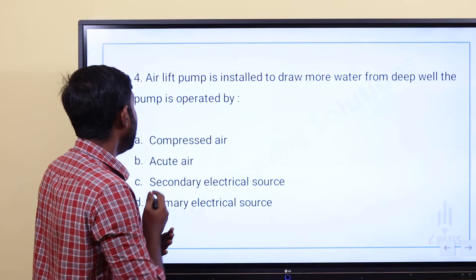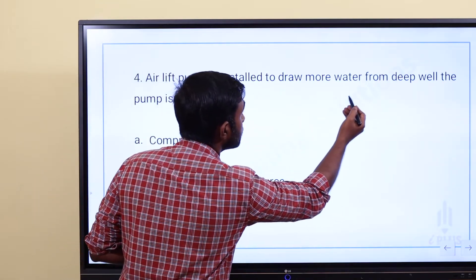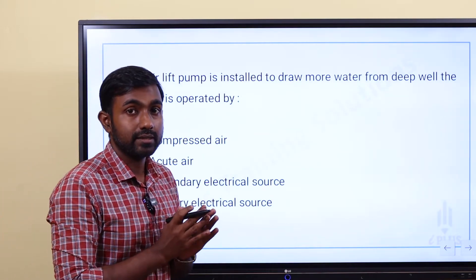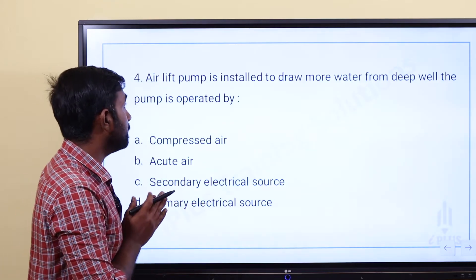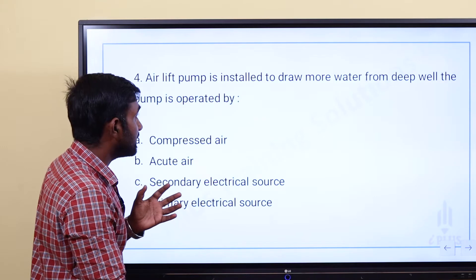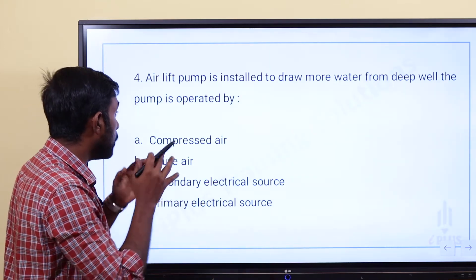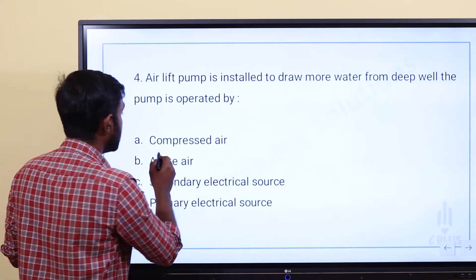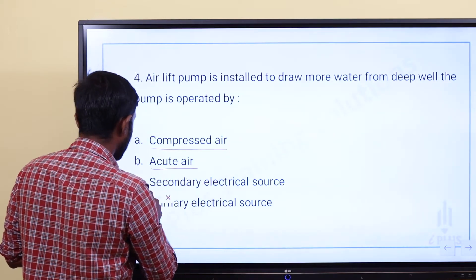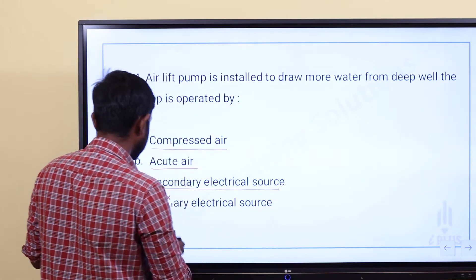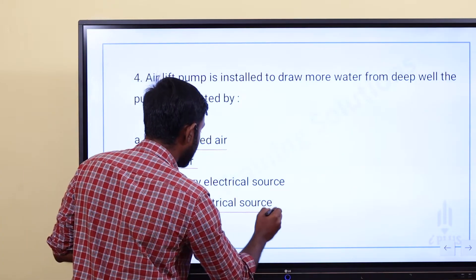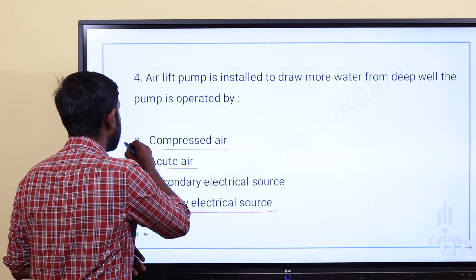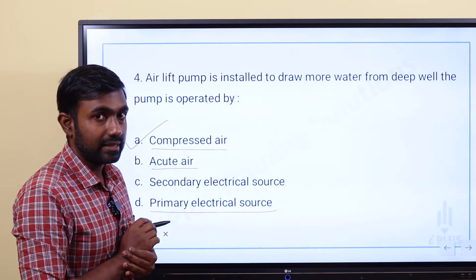Air lift pump is installed to draw more water from a deep well. The pump is operated by — Option A: compressed air. Option B: acute air. Option C: secondary electrical source. Option D: primary electrical source. The air lift pump is operated by compressed air.